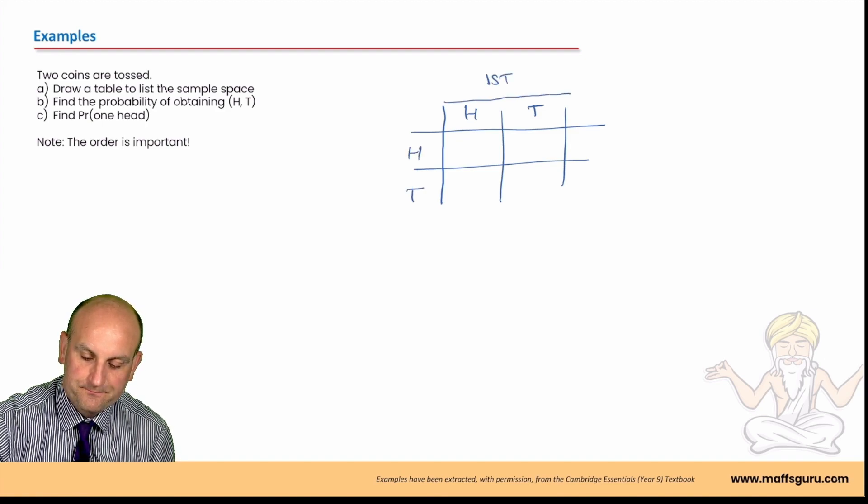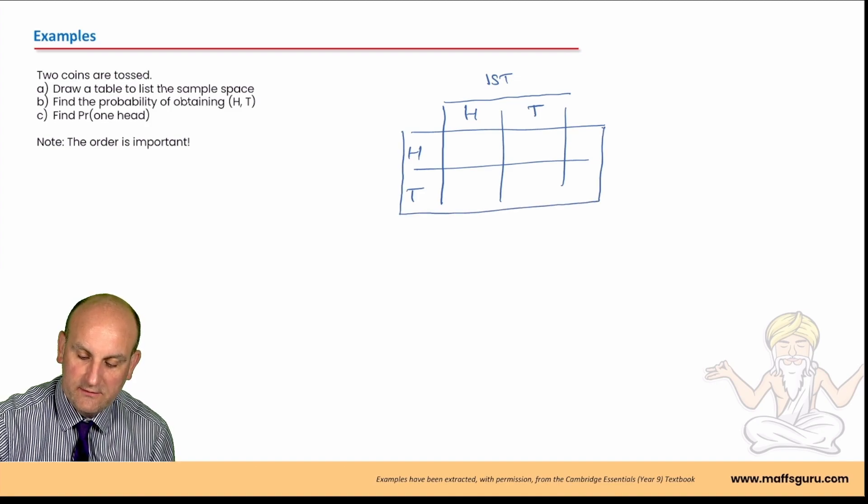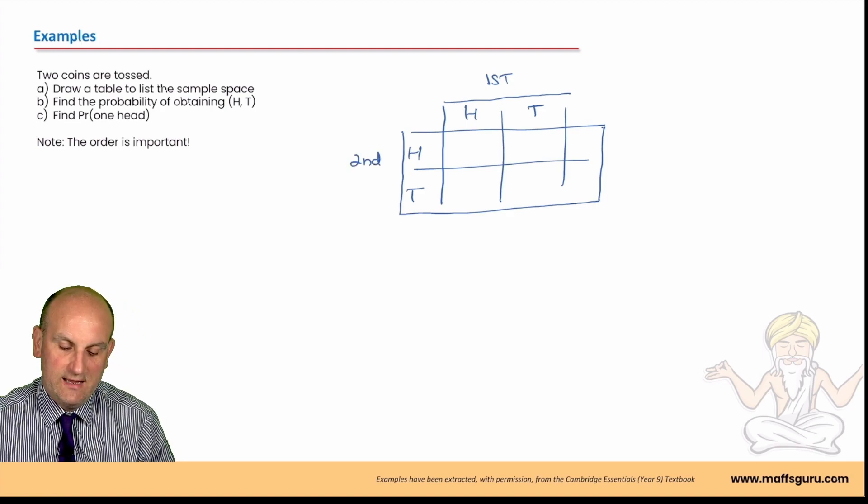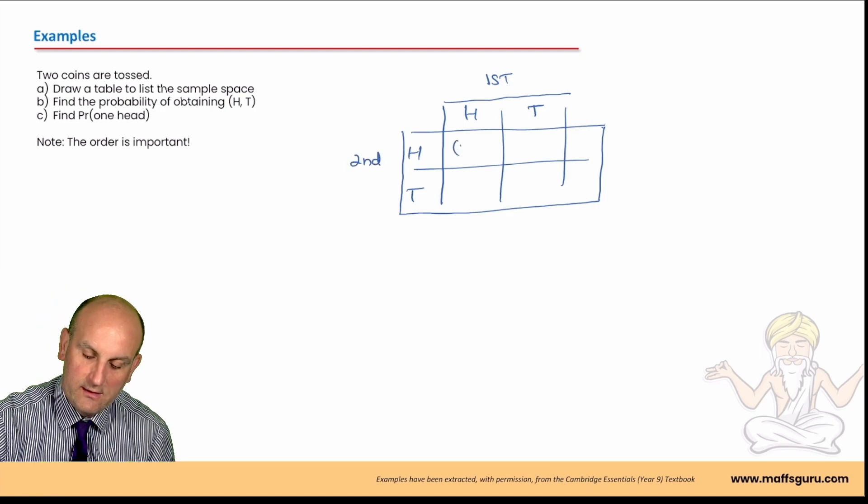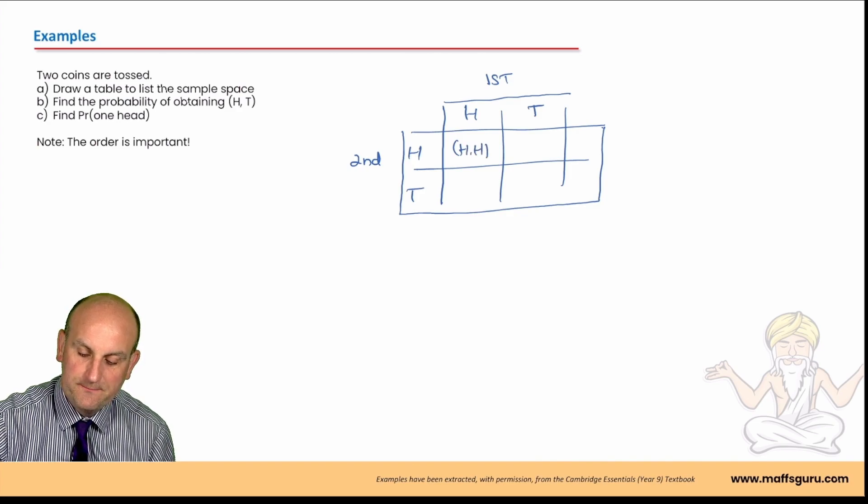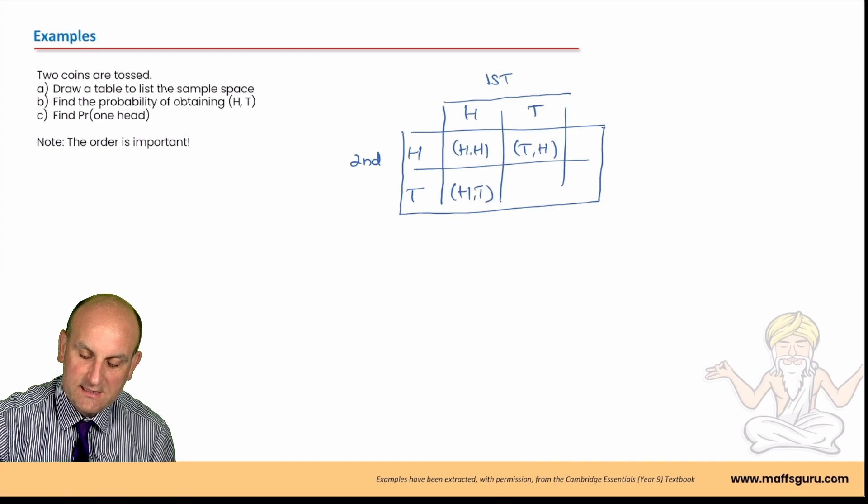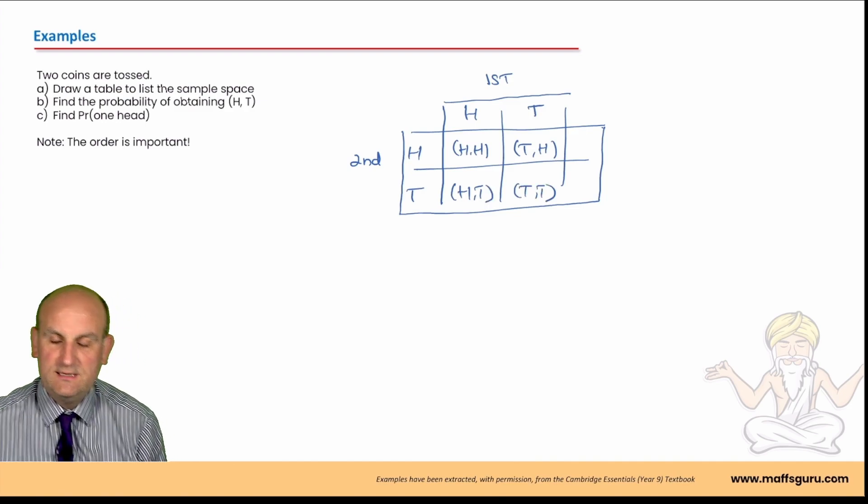So, I'm going to do first, draw a line across here. Probably don't need this column there, but anyway, second. And what have we got here? Draw a table to list the sample space. So, I'm going to have H comma H, T comma H, H comma T and T comma T.